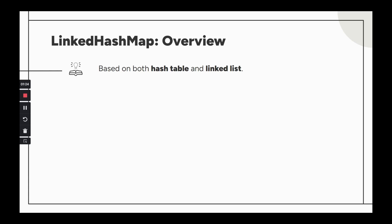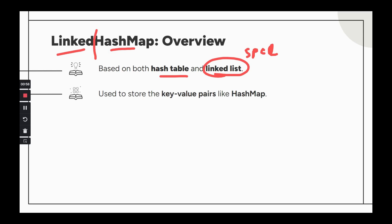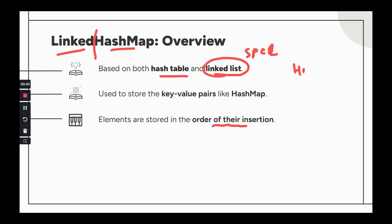LinkedHashMap consists of two parts: 'Linked' and 'HashMap.' It is based on a hash table and a linked list. The linked list has a special purpose here. Since it is a HashMap, it stores key-value pairs. The special role of the linked list is to maintain the order of insertion — elements are stored in the order they were inserted.